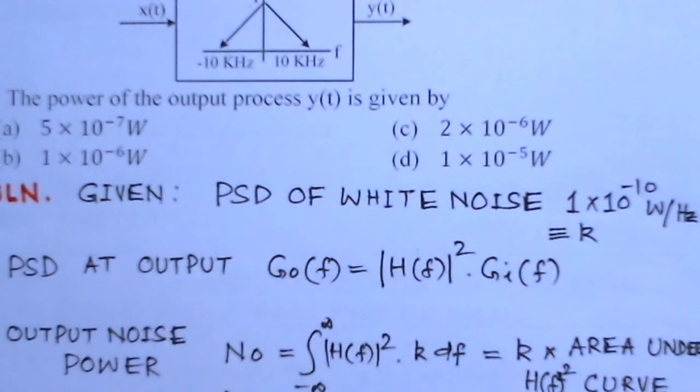When it is passed through the filter, we can find the power spectral density at the output. The relation is that output power spectral density equals the magnitude squared response of the filter times the input spectral density, that is G_i(f).